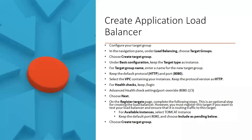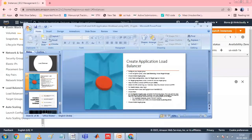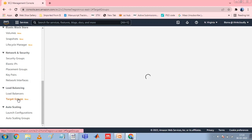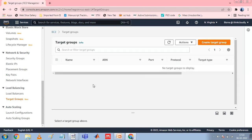Step one is configure a target group. Configuring a target group allows you to register targets such as EC2 instances. The target group that you configure in this step is used as the target group in the listener rule when you configure your load balancer. To configure your target group, open the Amazon EC2 console. In the left navigation pane under Load Balancing, choose Target Groups. Choose Create Target Group.